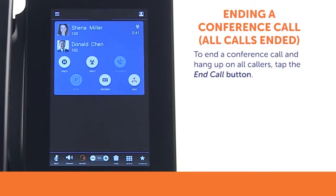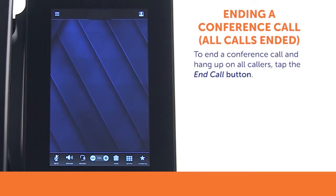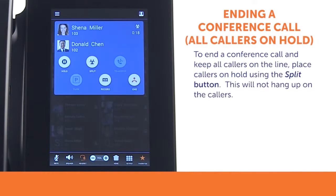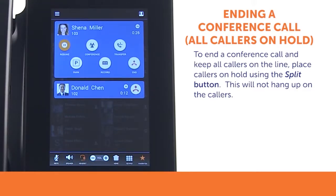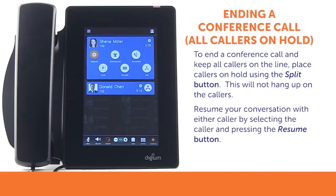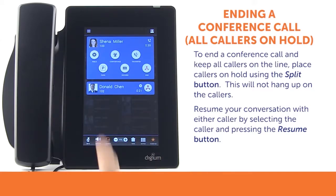To end a conference call, press the End Call button. This will hang up all parties on the call. If you need to continue talking to one party, you may split the call and drop one of the parties. Tap the Split button. You now have the ability to resume your conversation with either party by selecting a caller and pressing the Resume button.